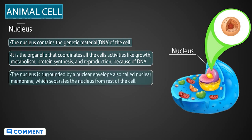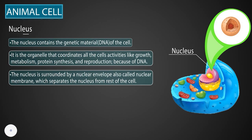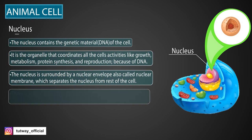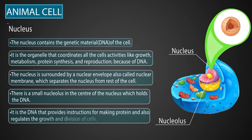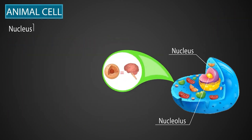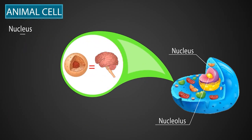The nucleus is surrounded by a nuclear envelope, also called a nuclear membrane, which separates the nucleus from the rest of the cell. There is a small nucleolus in the center of the nucleus, which holds the DNA. It is the DNA that provides instructions for making protein, and also regulates the growth and division of cells. You can compare the nucleus to the brain in the human body — the way the brain coordinates all the actions of the human body is similar to the way the nucleus guides and coordinates all the activities in the cell.